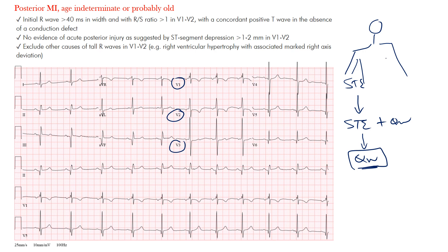Imagine a patient's chest: V1, V2, and V3 go from the right side to the left side, stopping around V6, and we don't have enough leads to go around the back. If you wanted to add posterior leads, you could add V7, V8, and V9 on the patient's back, which gives you an idea of the posterior portion of the heart. But we don't have that on the standard 12-lead, which is why we use V1 to V3.